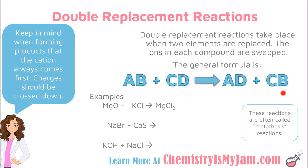The next portion is C and B coming together. So the potassium and the oxygen are going to come together to form a compound. That's going to give us potassium oxide, K2O. The 2 came from crossing down charges. Potassium has a charge of plus 1 and oxygen has a charge of minus 2. Cross those down to get potassium oxide. The final thing you should do is make sure that your reaction is balanced by adding coefficients. In this case, a coefficient of 2 is needed here to balance out the number of potassiums and chlorides.